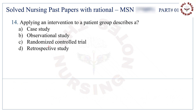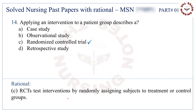Question number 14: Applying an intervention to a patient group describes a. The correct answer is C — randomized controlled trial.